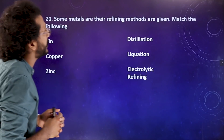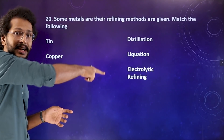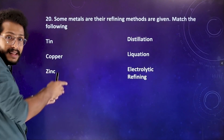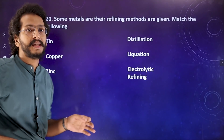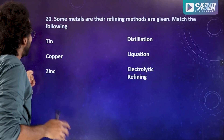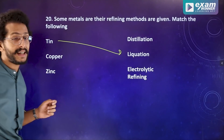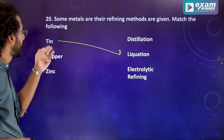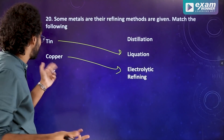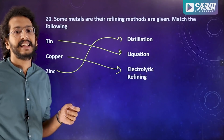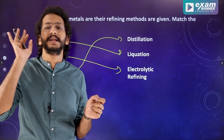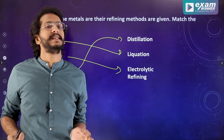Question number 20: some metals and their refining methods are given — match the following. The refining process for tin involves liquation, copper uses electrolytic refining, and zinc uses distillation.